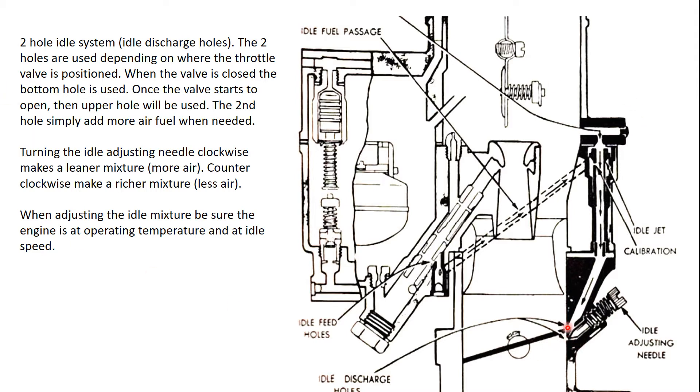This is a two-hole system. I call it a two-hole system because it's got two idle discharge holes. When the throttle plate is closed, the air-fuel mixture will come out of this bottom hole into the manifold. As you open the throttle up a little bit, it needs more air-fuel mixture, so it will go up to this top hole. Pretty soon you got it coming out both holes.